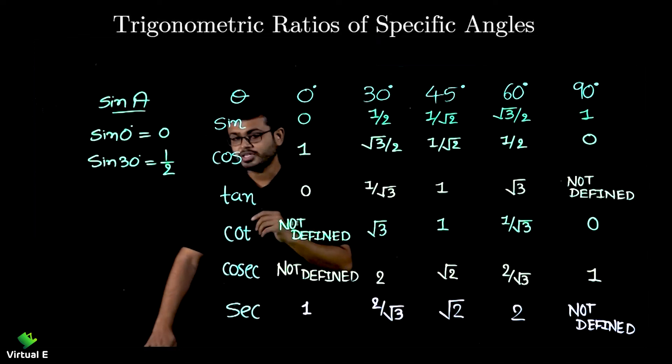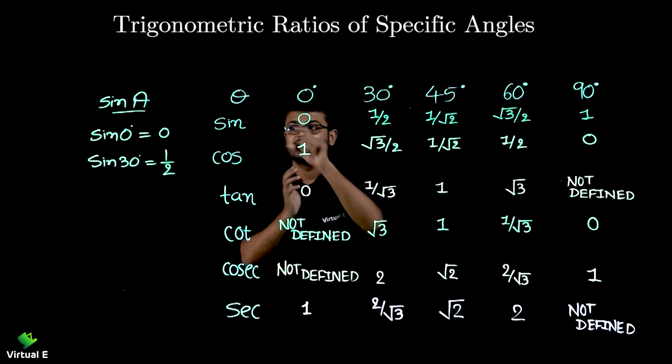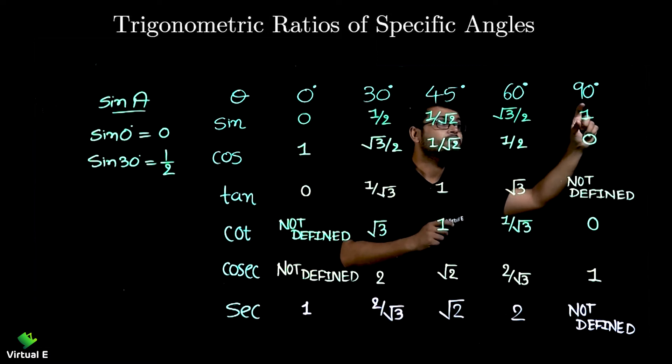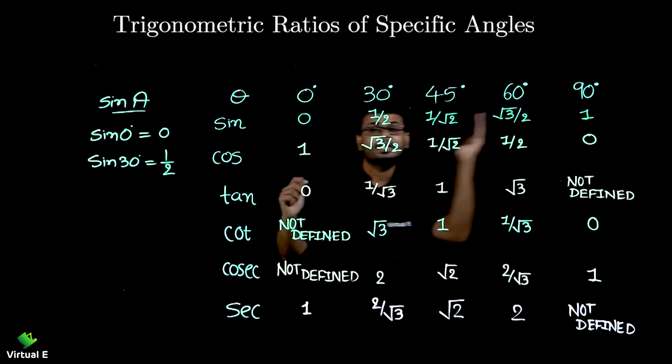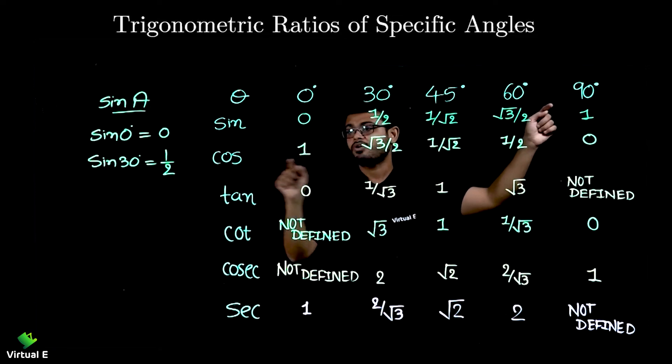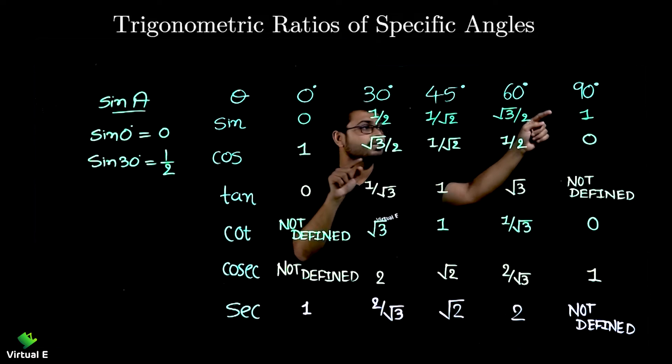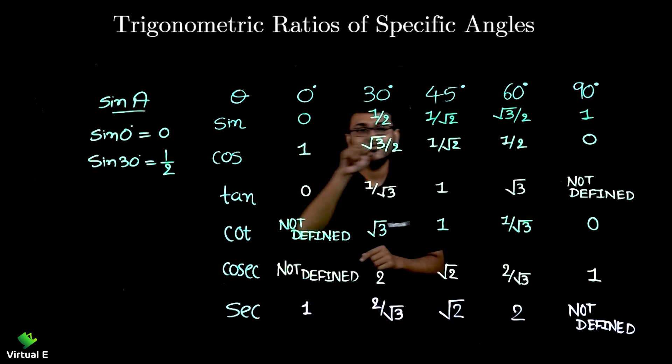Now come back to the cos. If you observe the values of sine and values of cos, where the value of sine stops, at that point cos is going to start in the reverse manner. See, sine 90 is 1 and cos 0 is 1. You need to write in a reverse way then you can get the value of cos.